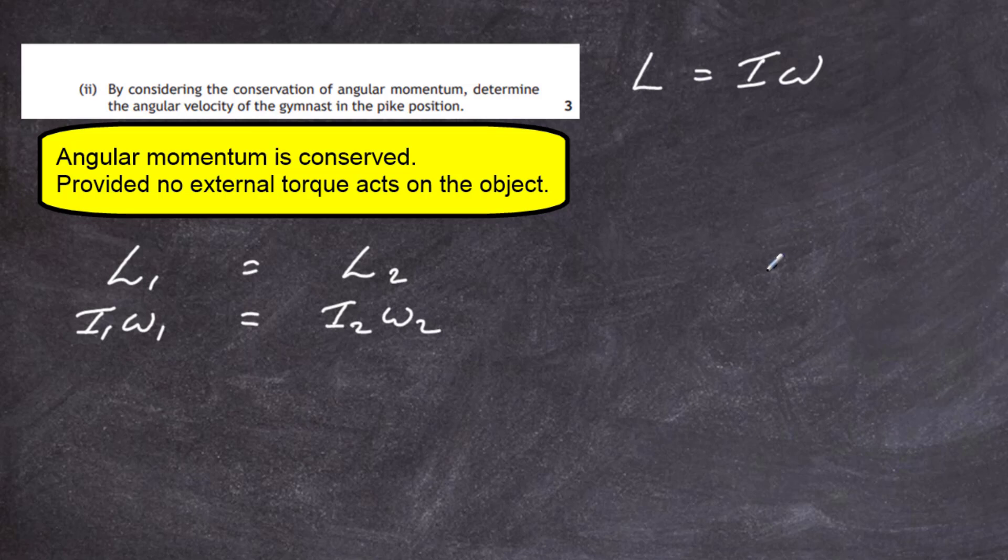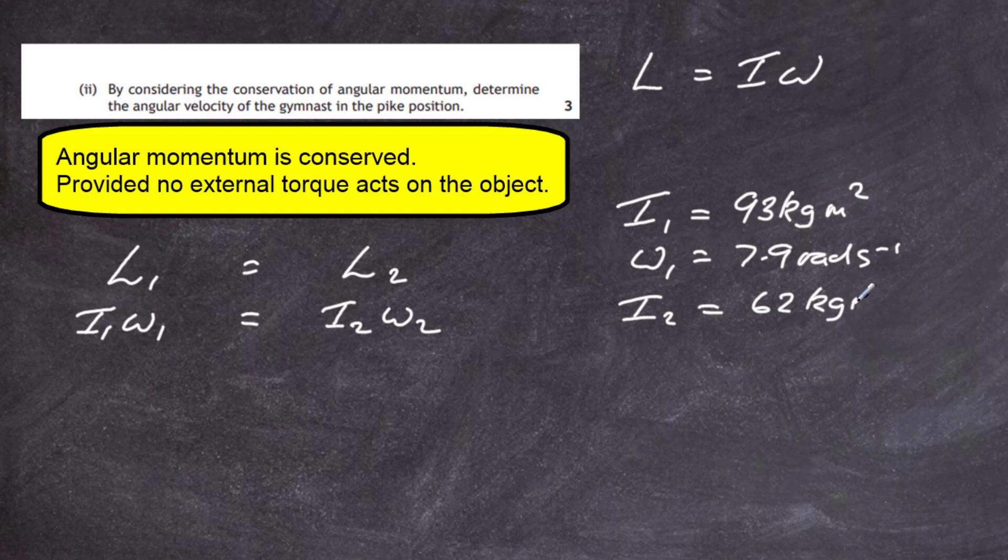Now we know from our data, we know that the initial I1, that's the initial moment of inertia of the gymnast was at 93 kilogram metres squared. We know that his angular velocity was 7.9 radians per second. And we know that the moment of inertia of the gymnast changed from 93 kilogram metres squared down to 62 kilogram metres squared. Remember all the mass was brought near the rotation axis.